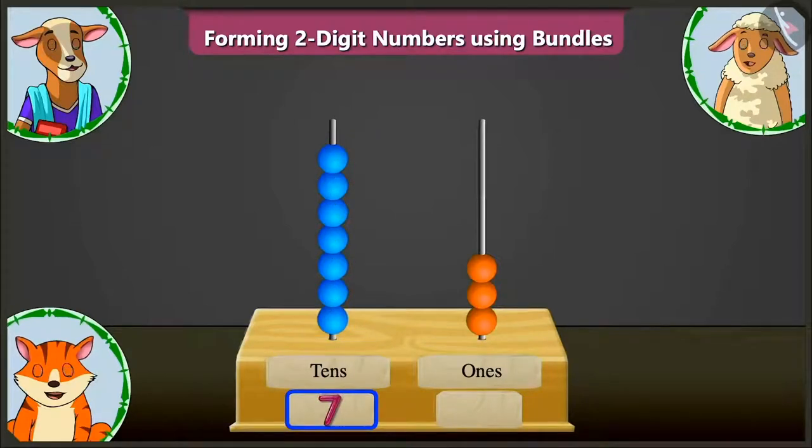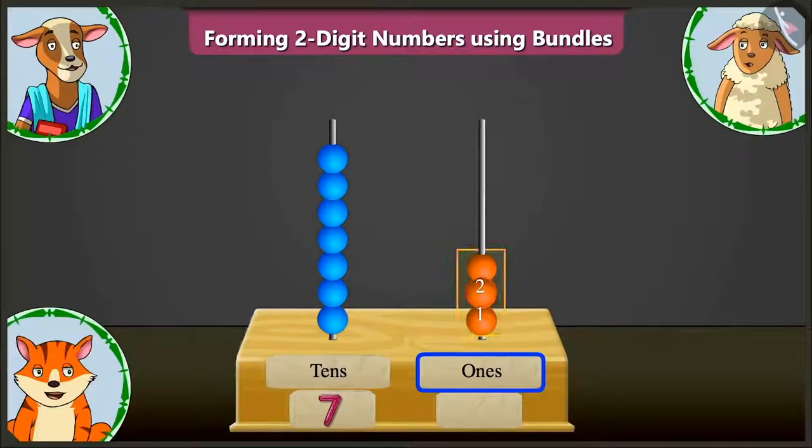Very good. Now, in the ones box, in the abacus, there are one, two and three beads. So, in the ones box, we have to write three.